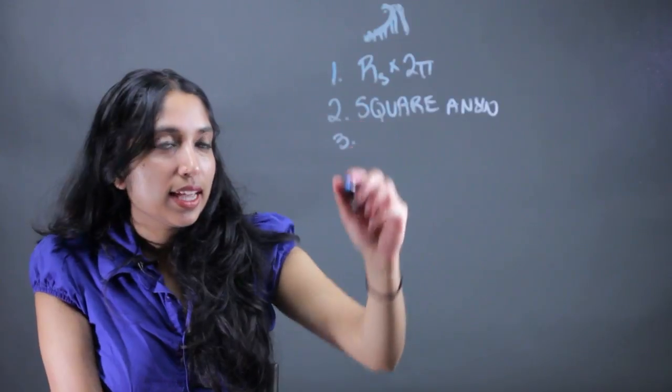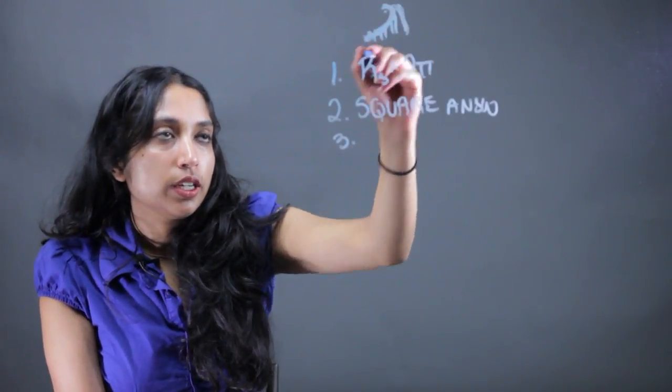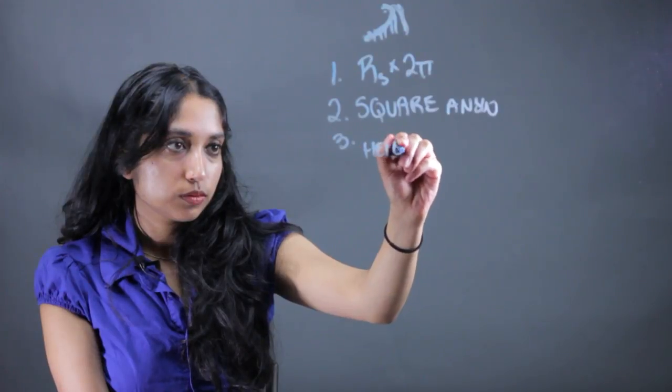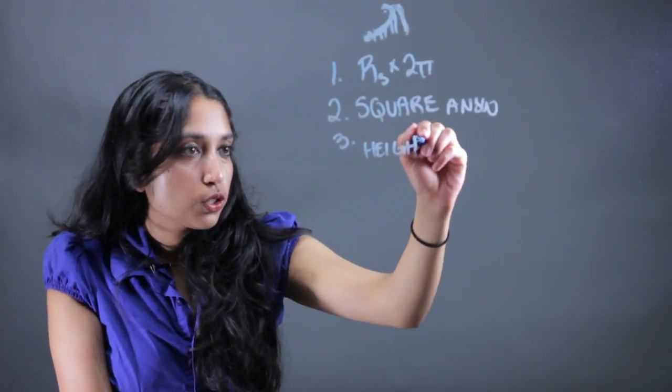Third thing you're going to do is take the height at each of the turns of the staircase, so how high up it goes, and you're going to square that.